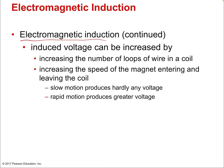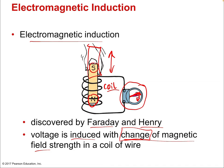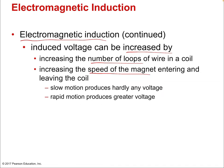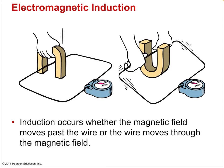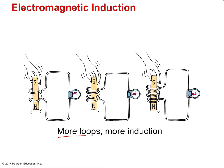The induced voltage in electromagnetic induction can be increased by the number of loops of wire, and by the speed of the magnet entering and leaving the coil — slow motion produces hardly any voltage, rapid motion produces greater voltage. Induction occurs whether the magnetic field moves past the wire or the wire moves through the magnetic field; it's just relative motion that matters. More loops means more induction.